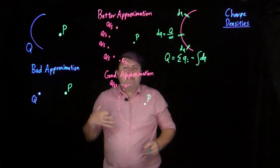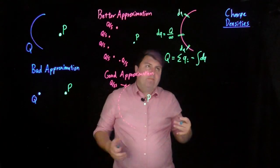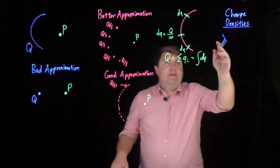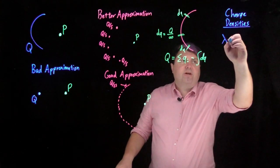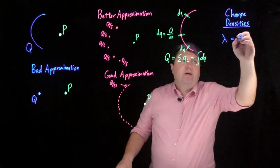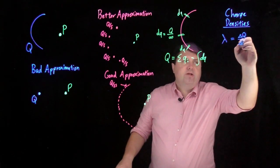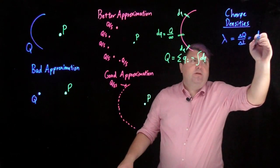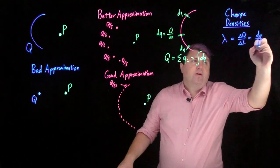So we might have seen densities back in fluids, this might be something new for us. So we're going to introduce some Greek characters for this. This is lambda, this is the linear charge density, which means the change in charge over the change in length, which, if we're starting to use calculus, would be dq over dl.